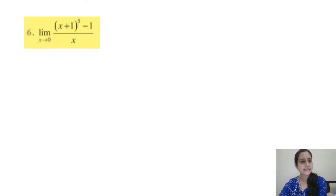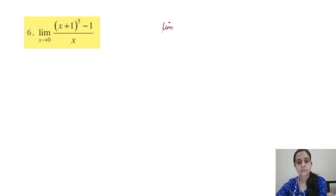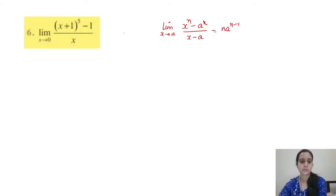Question 6: limit x tends to 0, (x+1)^5 − 1, divided by x. Directly substituting makes the denominator 0, so we cannot use direct substitution. Factorization is also difficult since the power is 5. We use the formula: limit x→a of (x^n − a^n)/(x − a) = n·a^(n−1). Try to convert this question into that format.